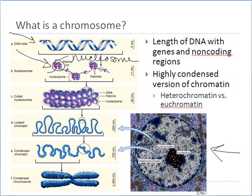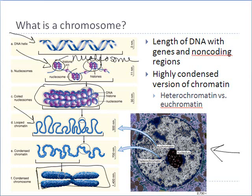We get long strings of nucleosomes all along, almost like pearls on a necklace strand. Then we coil all those nucleosomes together so they're even more tightly packed. Then we coil all those coiled nucleosomes to get what's called looped chromatin. If we condense that chromatin even further and pack it really tightly, we can create something actually visible to us under the microscope called a chromosome.